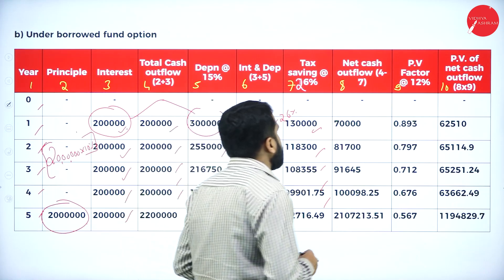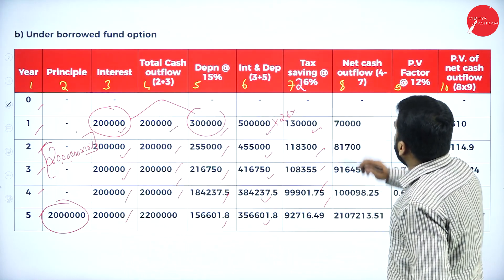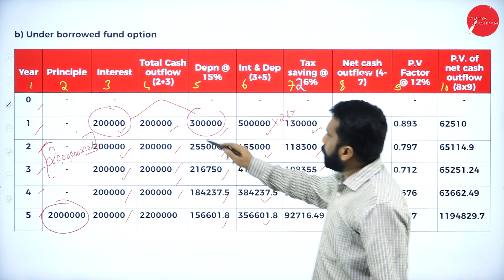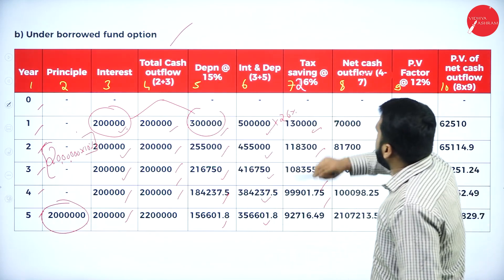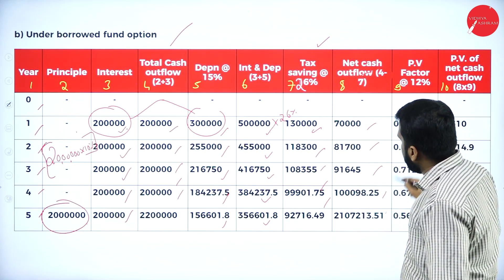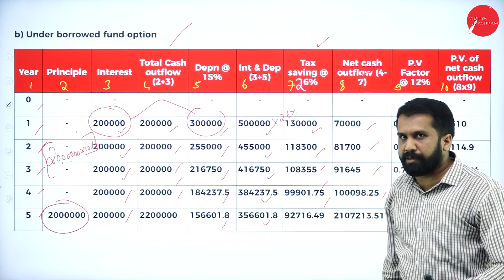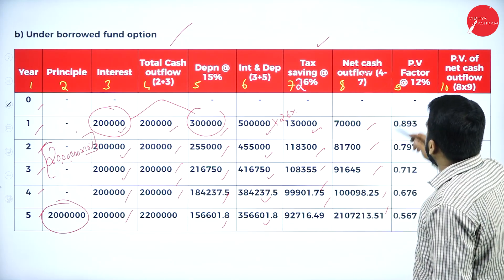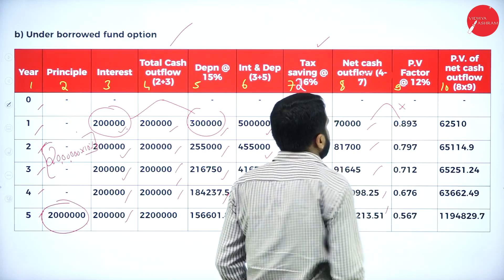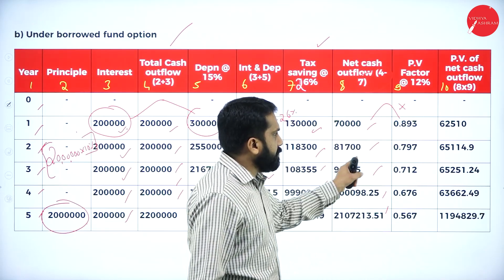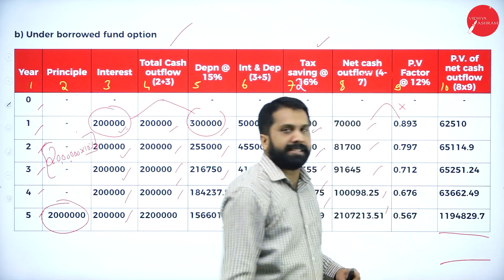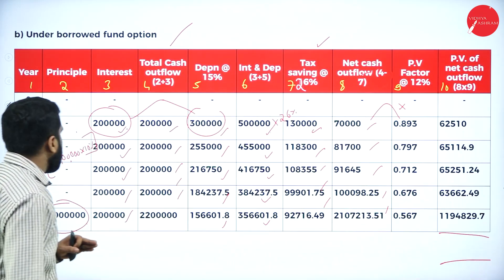Once you are done with that, net cash outflow: column 4 minus column 7. And these are the PV factors. Multiply this with this — outflow multiplied with PV factor — you will get your present value of tax saving.